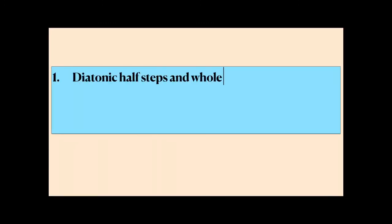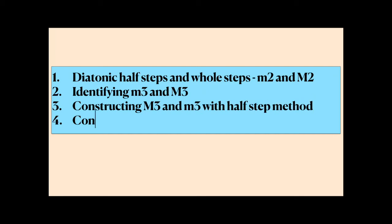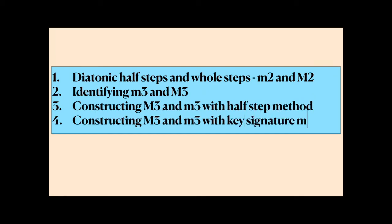Let's review what we've talked about today. We learned that diatonic half-steps and diatonic whole-steps can be called minor seconds and major seconds. We learned how to identify minor thirds and major thirds on the staff by counting how many half-steps separate the two pitches. We've learned how to construct a major third and a minor third above or below any given pitch using the counting half-steps method, and how to construct a major third or a minor third above or below any given pitch using the key signature method. Now would be a great time to use some of your online tools to practice identifying and constructing major and minor thirds.